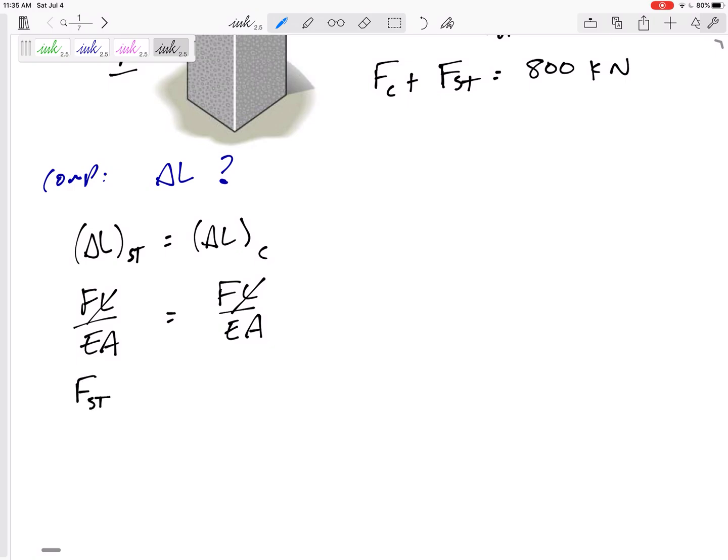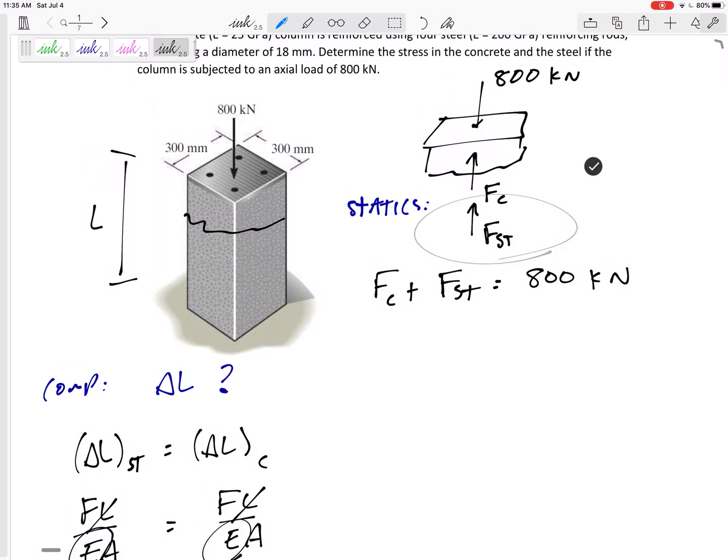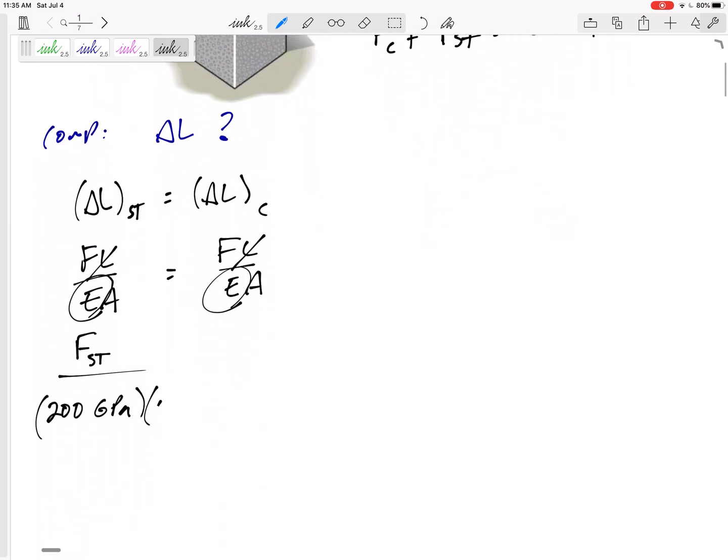So I've got the force in the steel over the E of the steel, 200 GPa. Usually I would like to change that to 200,000 MPa. But again, as long as my left-hand side of my equation is the same as the right-hand side of my equation, I'm doing fine. So, and then the area of the steel. What's the area of the steel? I decided to group them all together. So I need the total area of all of those steel. I have four of them, pi by four diameter squared.